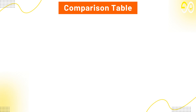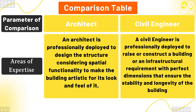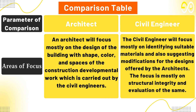Main differences between architects and civil engineers — Comparison Table. Areas of expertise: An architect is professionally deployed to design the structure considering spatial functionality to make the building artistic for its look and feel. A civil engineer is professionally deployed to raise or construct a building or infrastructural requirement with perfect dimensions that ensure the stability and longevity of the building. Areas of focus: An architect focuses mostly on the design of the building with shape, color, and spaces. A civil engineer focuses mostly on identifying suitable materials and suggesting modifications for the designs offered by architects, with focus on structural integrity and evaluation.